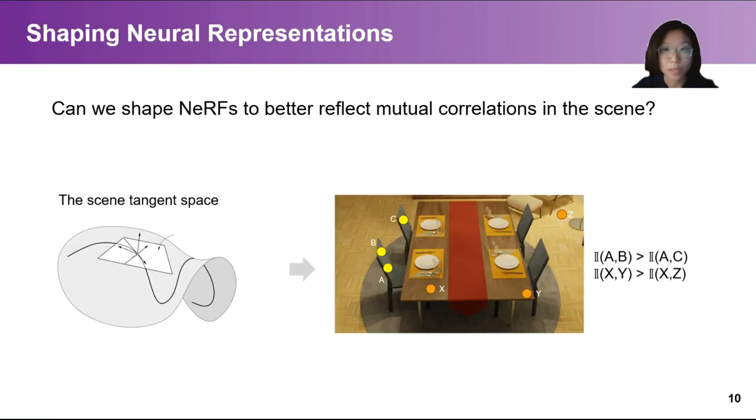Consequently, the proposed shaping aims to achieve a point in the neural weight space so that perturbations in its tangent space respect maximal mutual information between points from the same semantic entity.